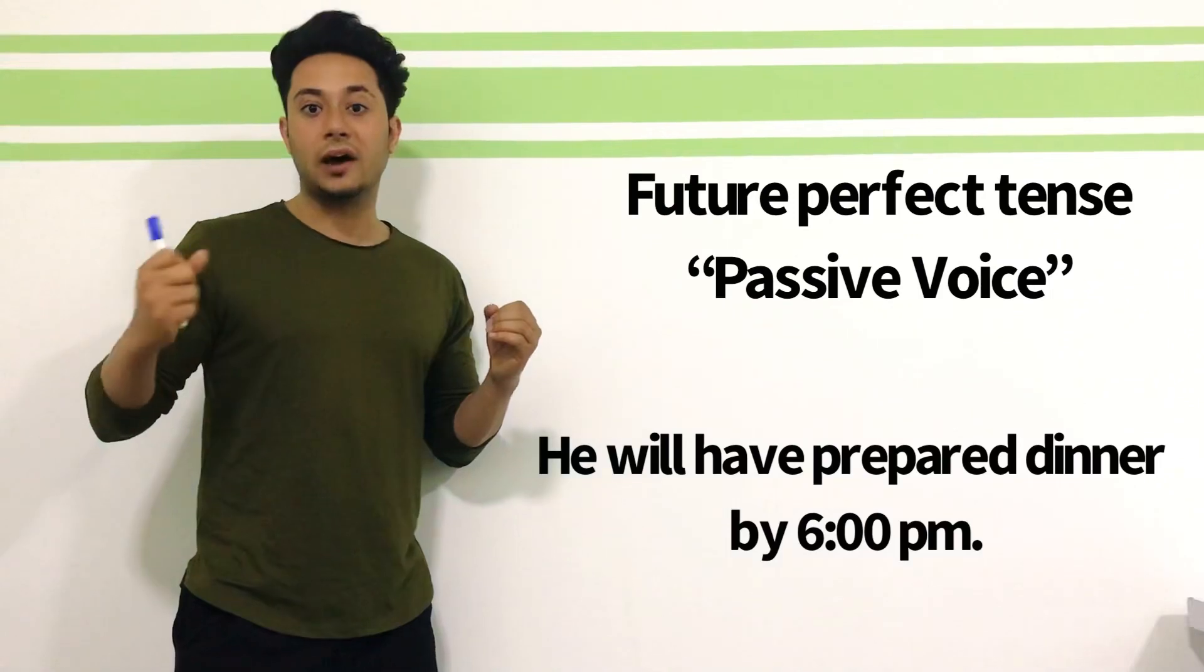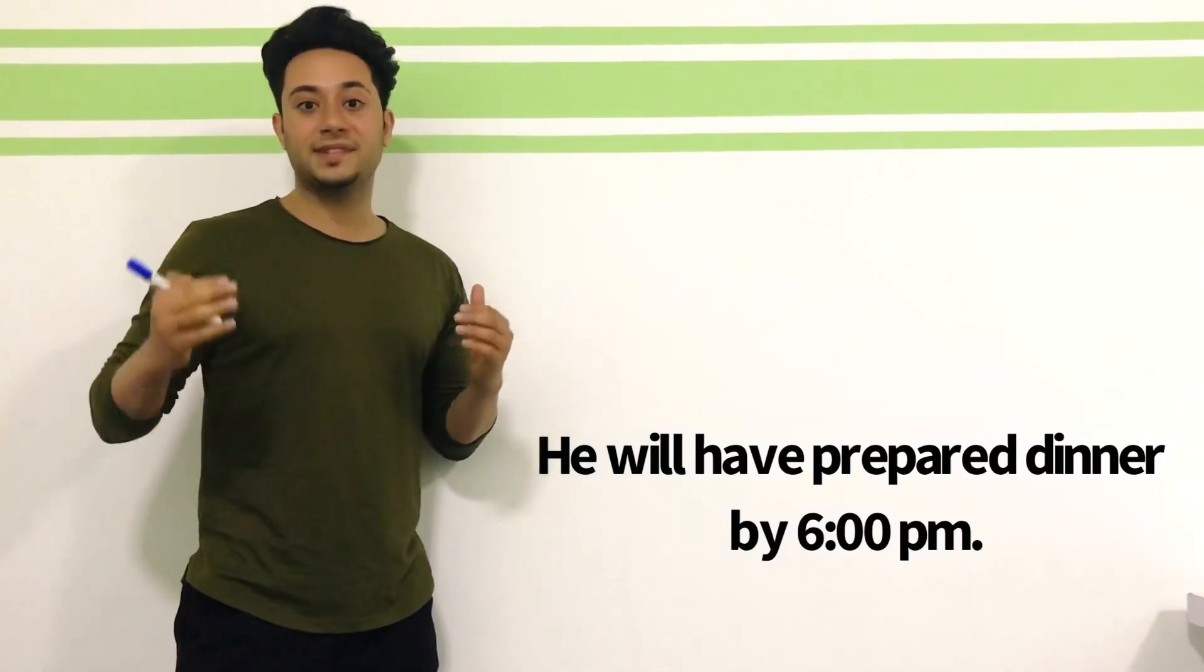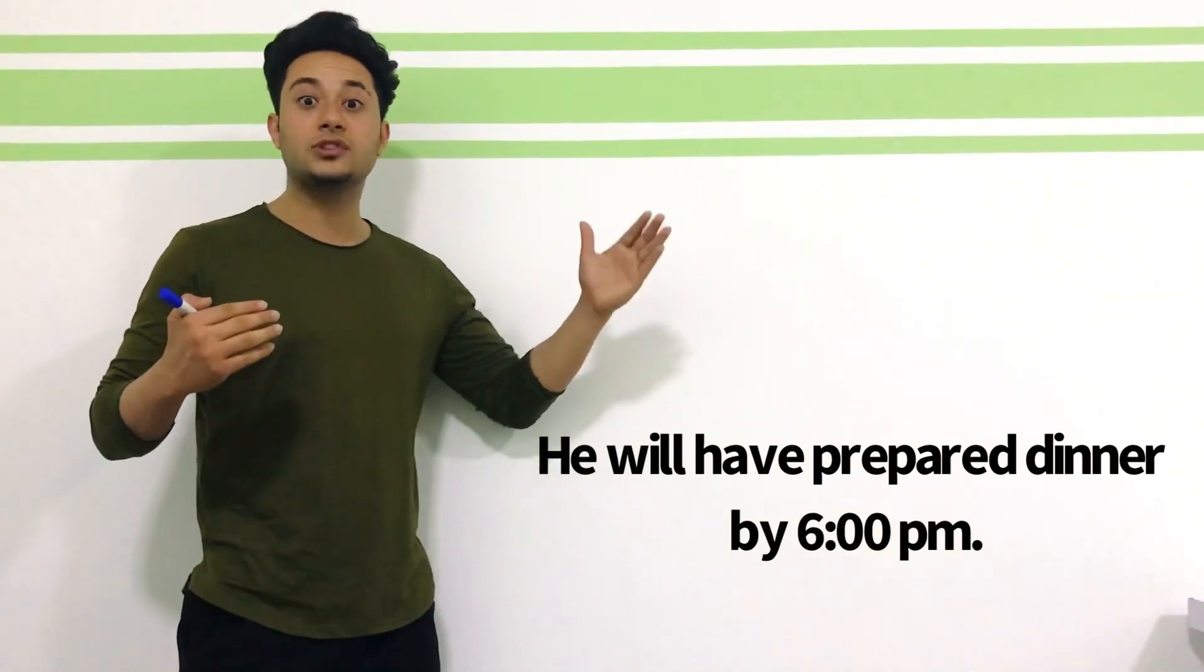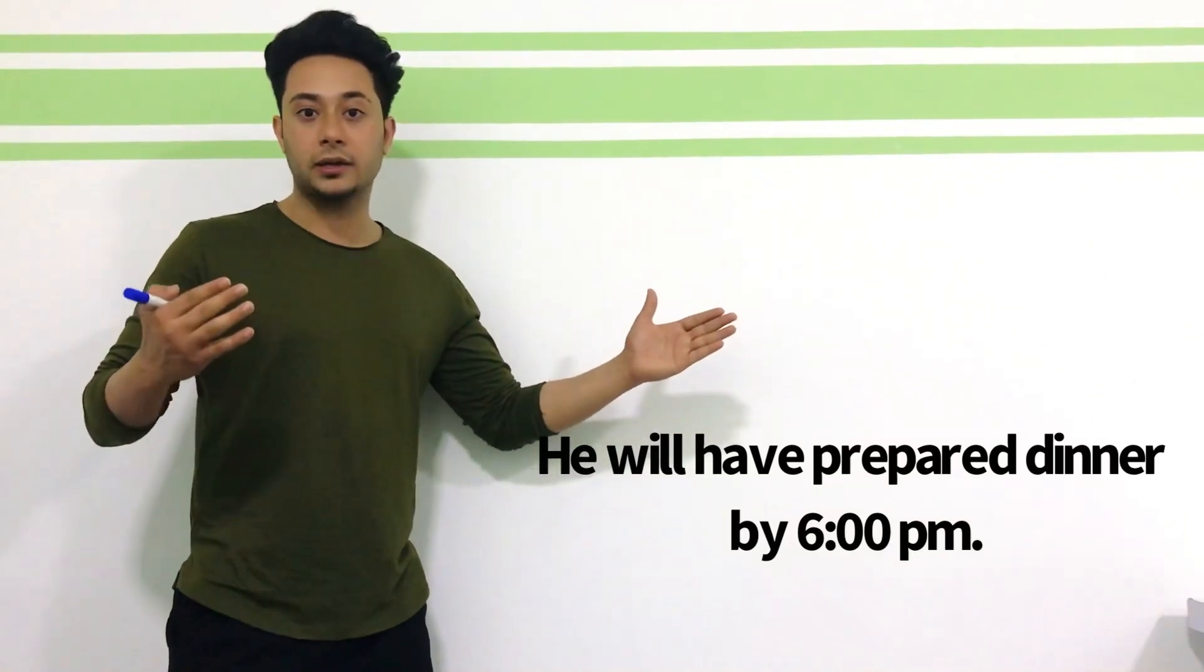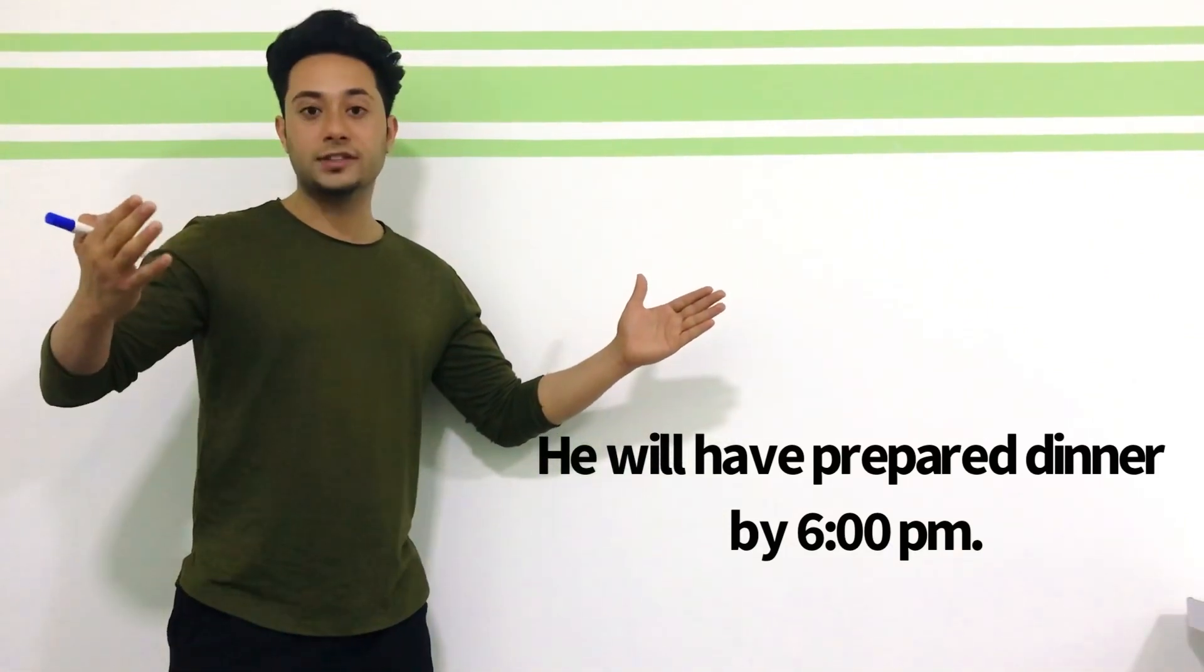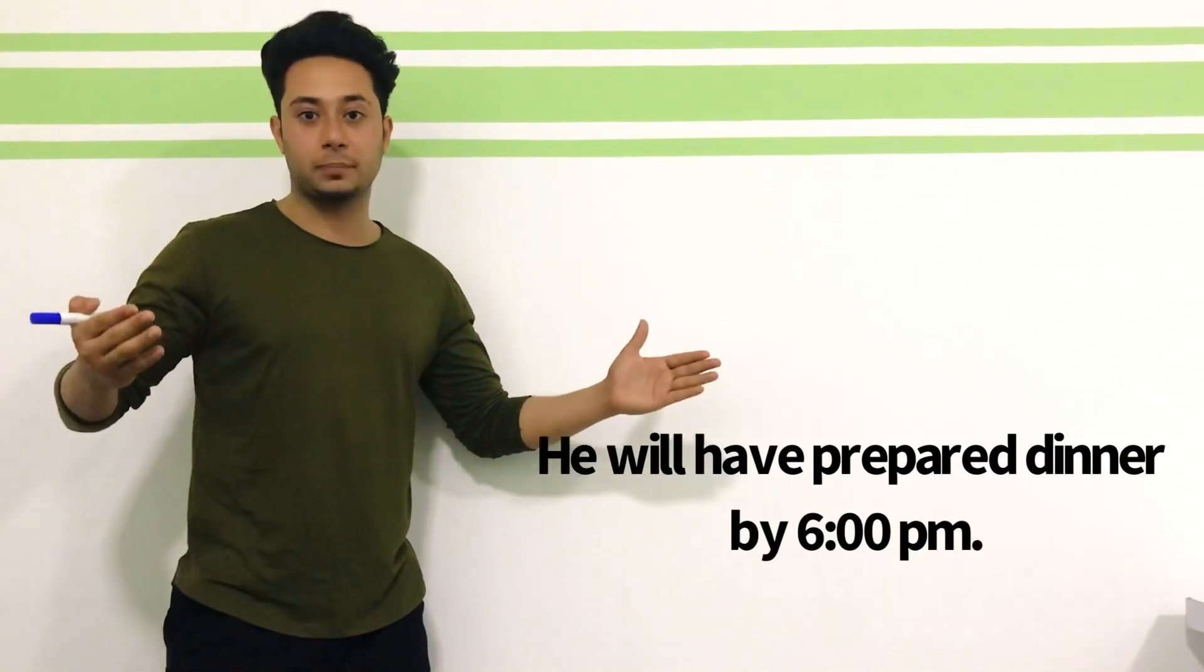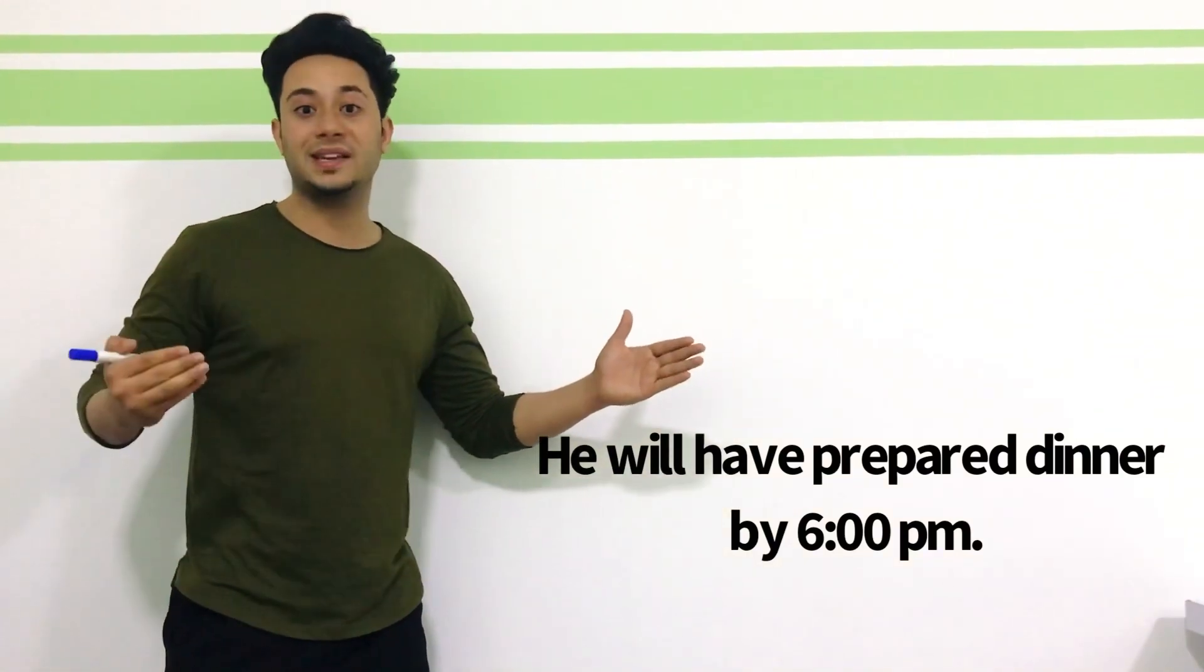For example, he will have prepared dinner by 6pm. Dear friends, pretend that now it's 3pm and we are talking about 6pm. For example, let's repeat our example: you will have prepared dinner by 6pm.